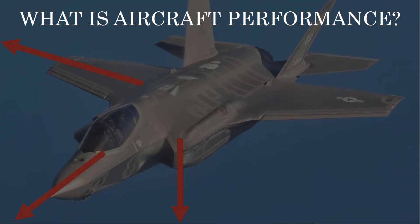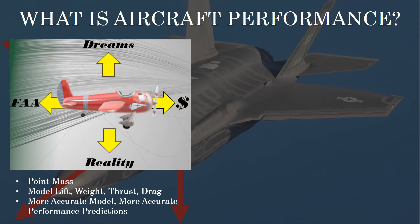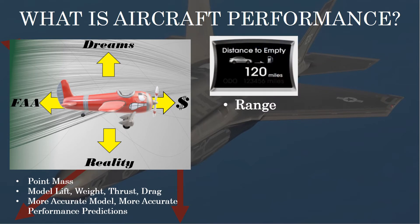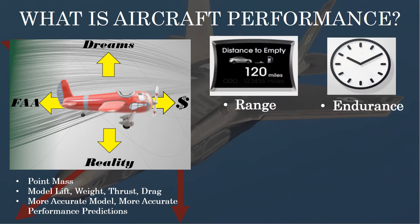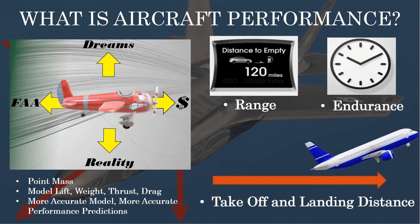Aircraft performance. In aircraft performance, we oftentimes model the aircraft as a point mass and we care about things like lift, weight, thrust, or drag in order to understand what kind of performance we're going to get out of the aircraft. Some of the performance that we care about might be range — how far can we go — or endurance — how long can we stay up in the air. Then takeoff and landing distance: how much runway do I need to take off or land? There are others as well, like rate of climb, lift-to-drag ratio, and glide path angle. Here we're doing some simple modeling to make estimates on performance, and of course, if we model certain attributes with higher fidelity, we can get better estimates.